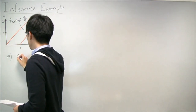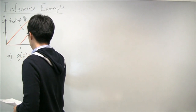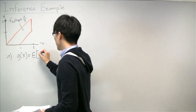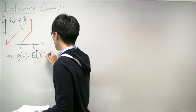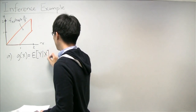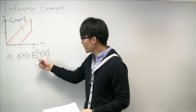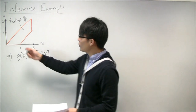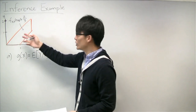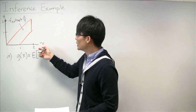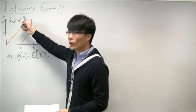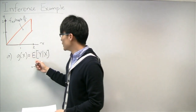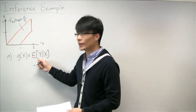Remember that the LMS estimator is really just a conditional expectation. So the LMS estimator of Y based on X is the conditional expectation of Y given X. When we have a plot of the joint PDF and we're dealing with these two random variables, especially when the joint PDF is constant like this, it's often easy to calculate this conditional expectation of Y visually.